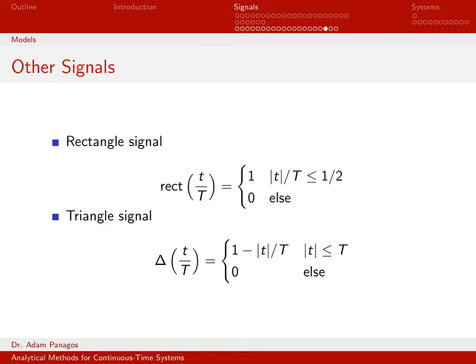You can see that just by plugging in here. What is the value of the triangle signal when t is equal to 0? Well, when little t is equal to 0, this term is 0, and I'm left with 1. As little t increases, let's say t is equal to capital T over 2. Capital T over 2 divided by T is a half. 1 minus a half is a half. So you can see it ramping down. Until eventually, when little t is equal to capital T, capital T over capital T is equal to 1. 1 minus 1 is 0. So that's when this signal goes to 0.